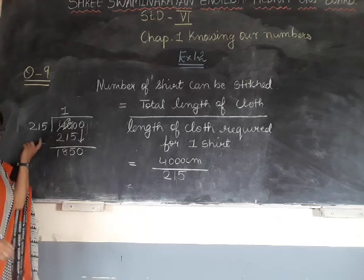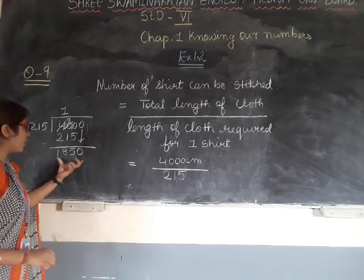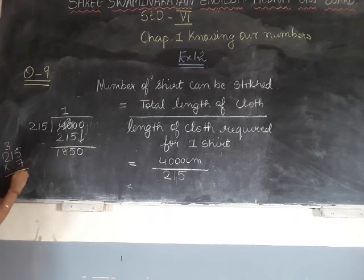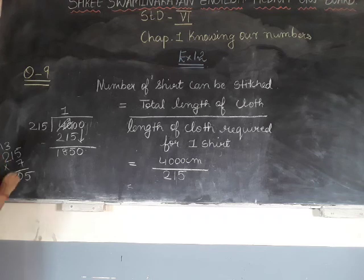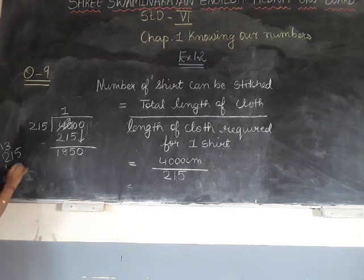Now we have to check whether 215 goes into 150 or not. We have to multiply and check everything. We randomly try 7: 7 times 5 is 35, 7 times 7 is 49 — carry 10, 7 times 1 is 15. Result is 215 times 7. It does not work, so we will try with 8.